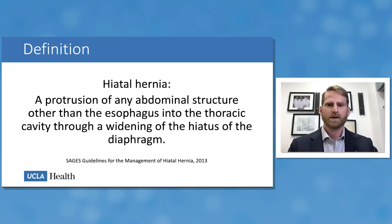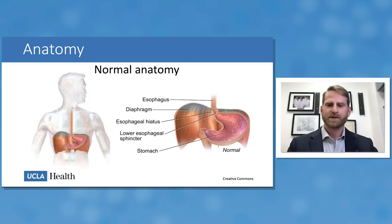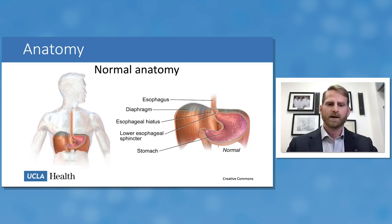The hiatal hernia is the protrusion of any abdominal structure, other than the esophagus, into the thoracic cavity through a widening of the hiatus of the diaphragm. This is often a challenge for patients because it is a hernia you cannot see. It is a hernia through the normally occurring esophageal hiatus, where the esophagus normally passes through the diaphragm from the chest into the abdomen.